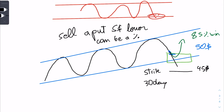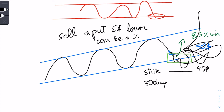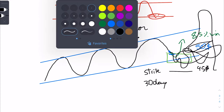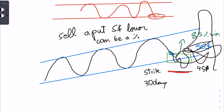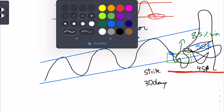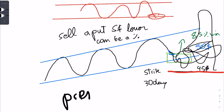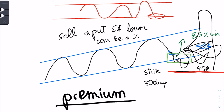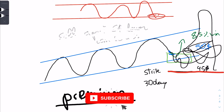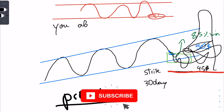Now the stock can go anywhere — it can even be at a loss from the position you started in. You just want it to expire above $45. If it expires above $45, that's where you collect the premium. If it's close to $45 and you don't want to get exercised for 100 shares, you can close your position early. Most of the time it will still be in profit because of time decay.